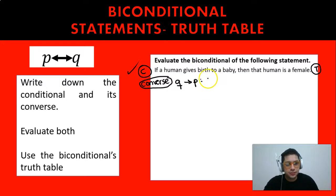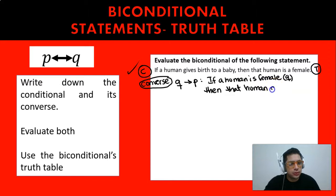So in this case it would be: if a human is female, which is Q, then that human gives birth to a baby, which is going to be what we had as the hypothesis in the first one but now is the conclusion.